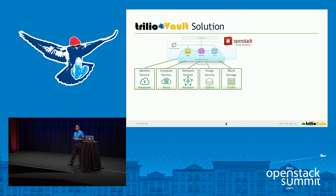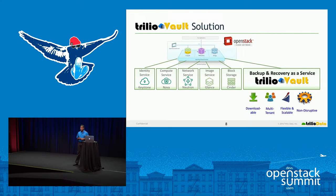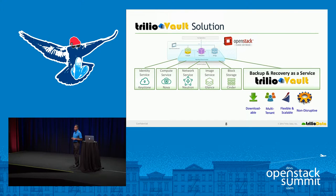Trilio Vault from Trilio Data offers a true backup and recovery solution for OpenStack. Ours is an add-on service to your OpenStack cloud — just like Compute, networking, or Cinder — self-serviceable and scalable. Once you install it, it becomes part of your OpenStack cloud. It is multi-tenant and self-serviceable. One important thing about our solution is it is non-destructive. Whether you're deploying on a 100-node or 1,000-node OpenStack cloud, it can be completely automated with DevOps tools. We ship Ansible playbooks for managing deployment and upgrade, so you can automate end-to-end deployment with your cloud.